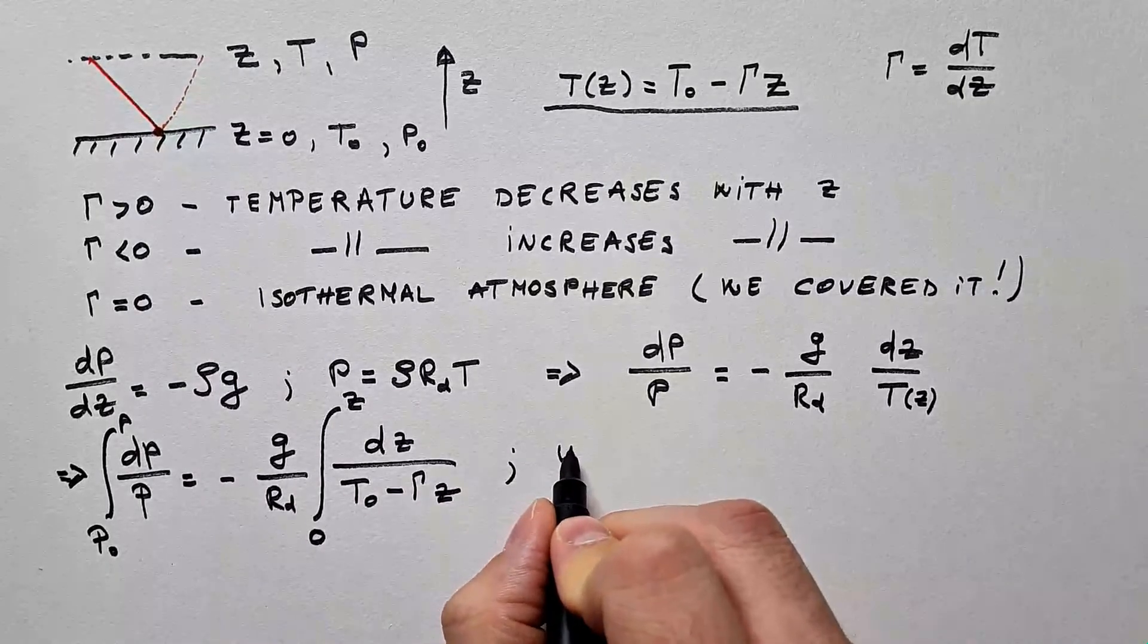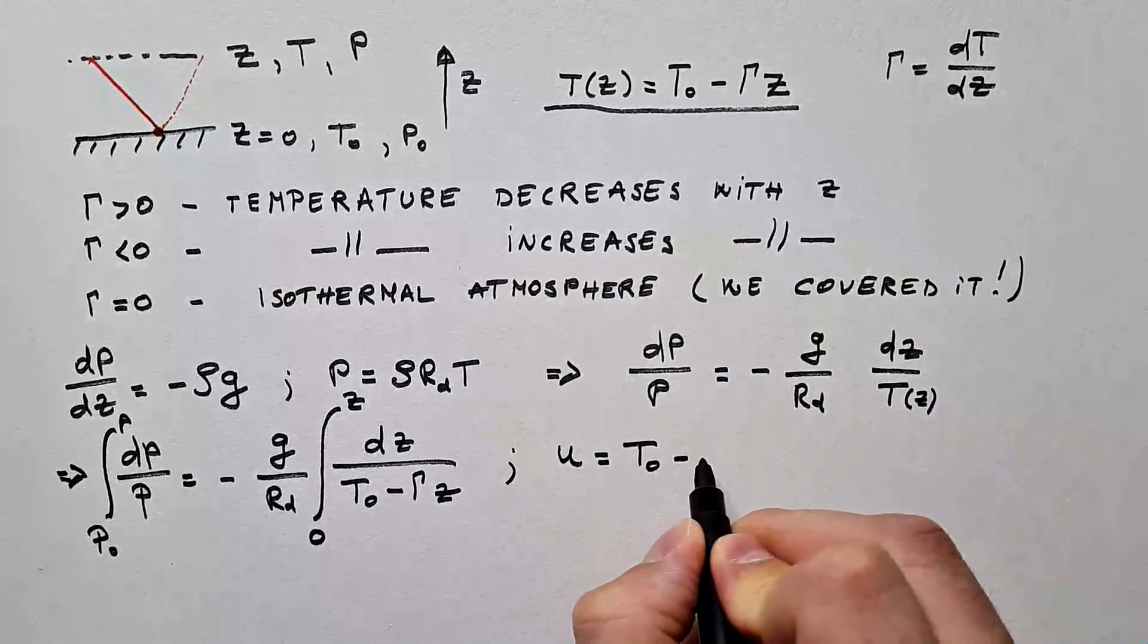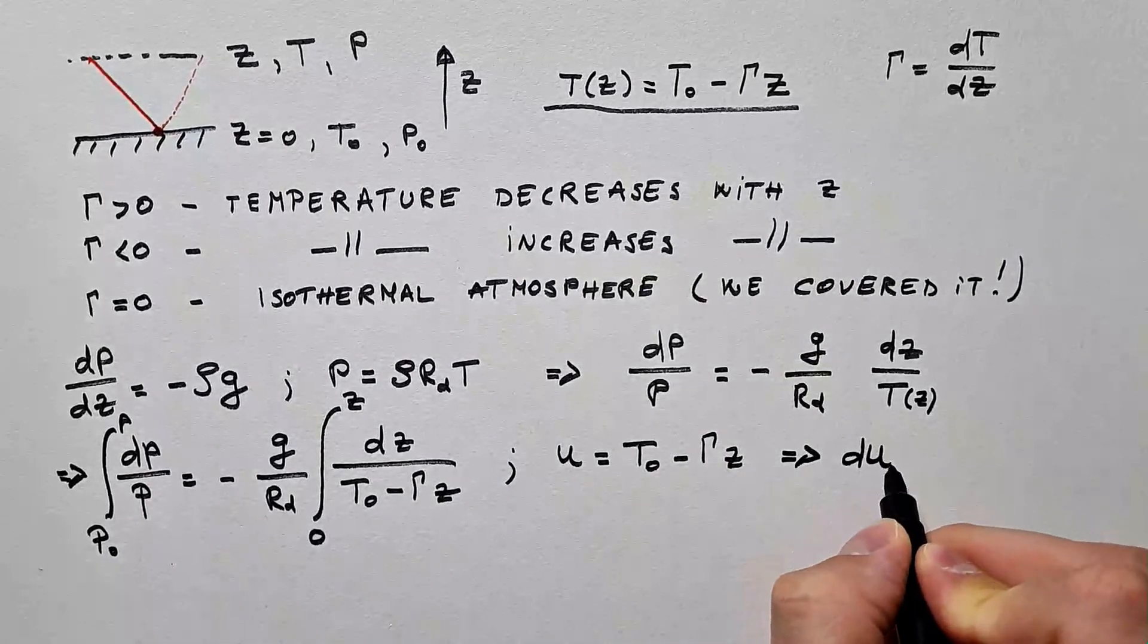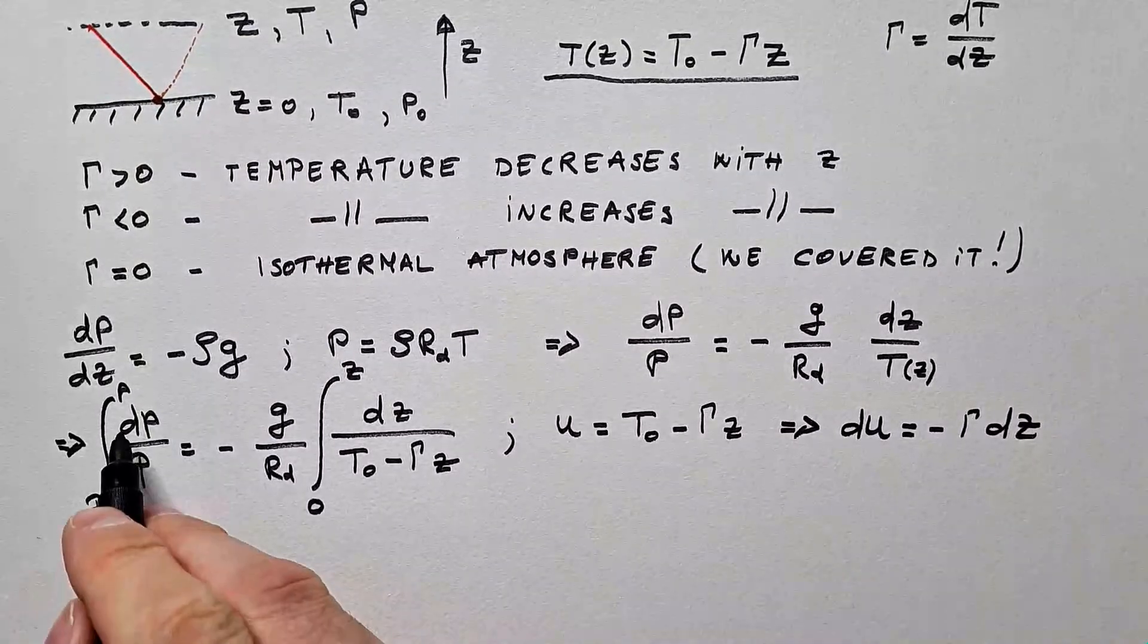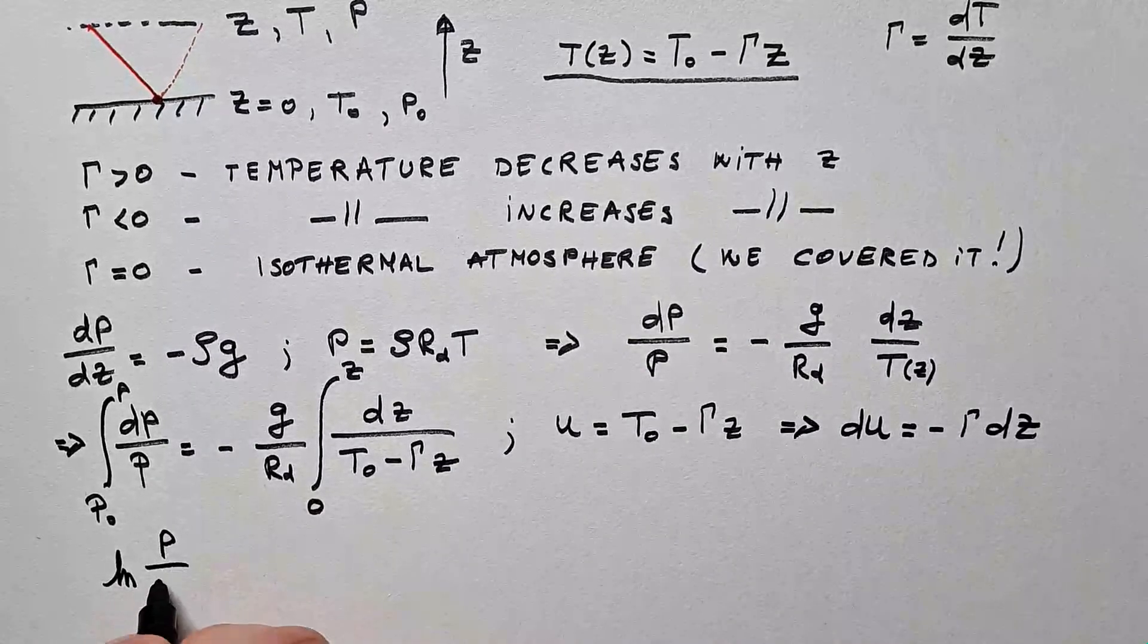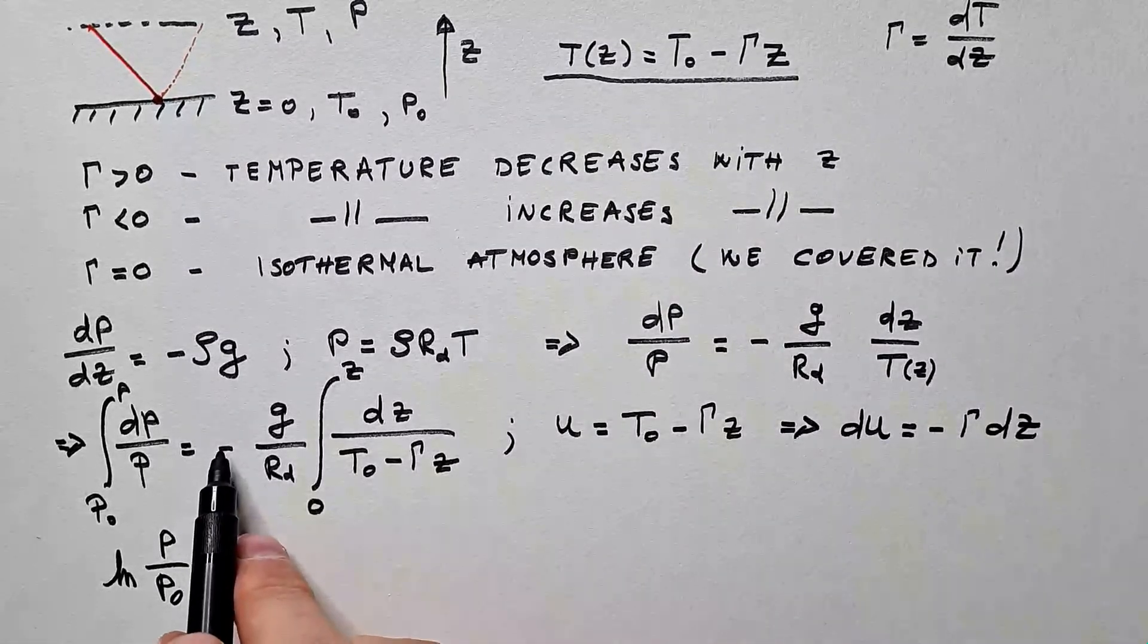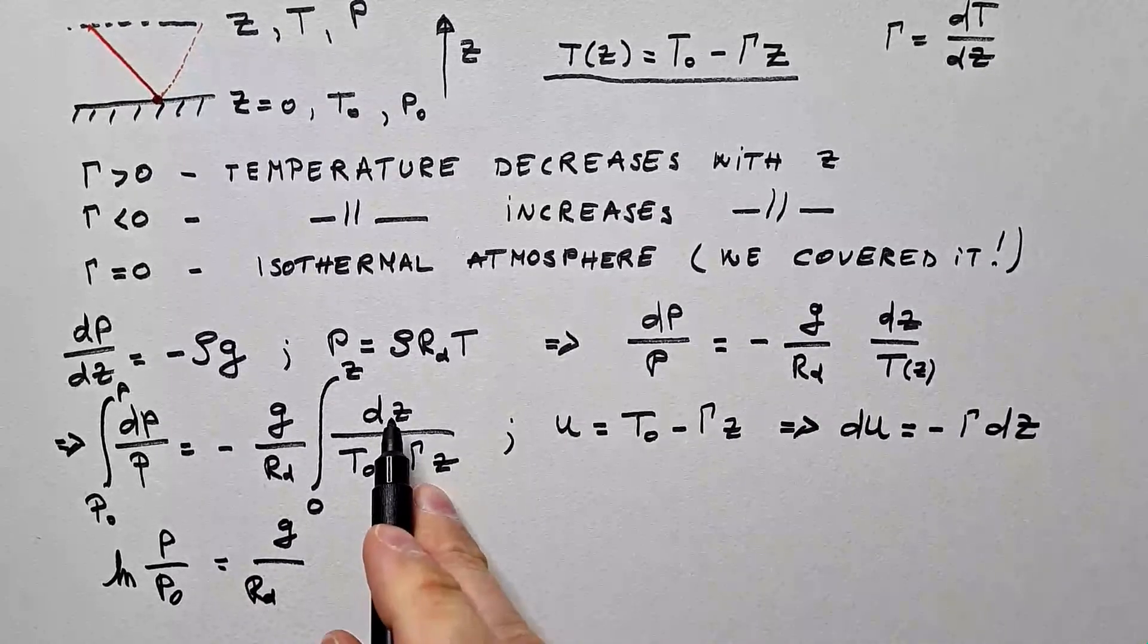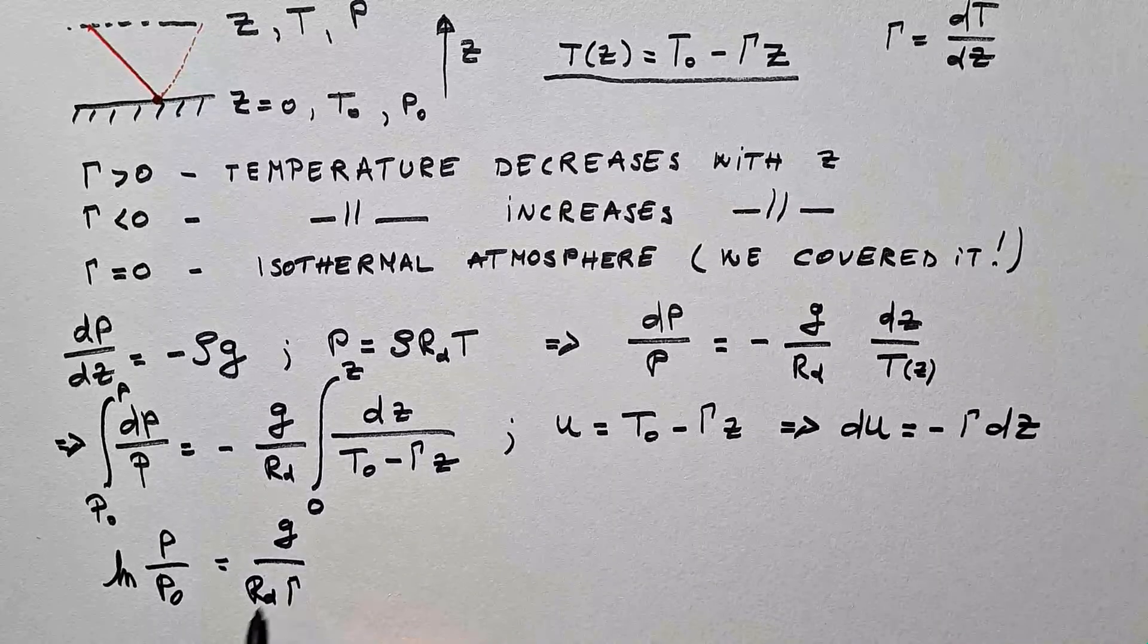To solve this integral, we will introduce substitution. Let's say some u is equal to T₀ minus γz, which means du is minus γ dz.